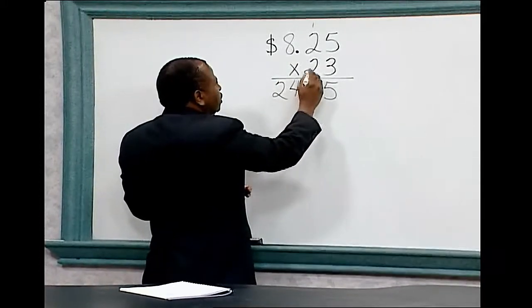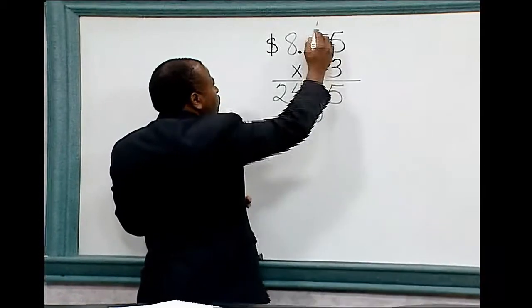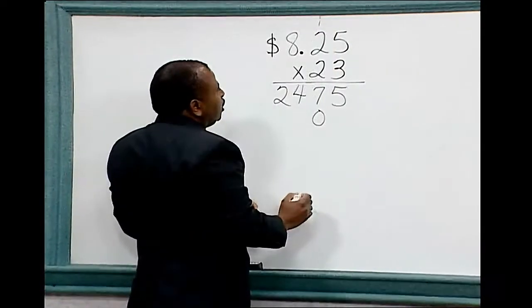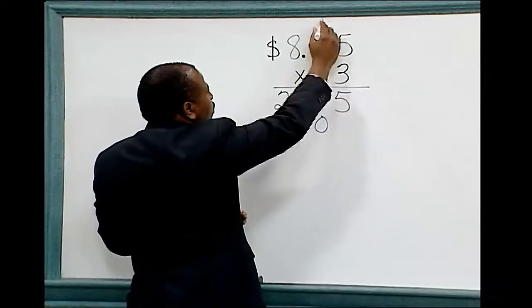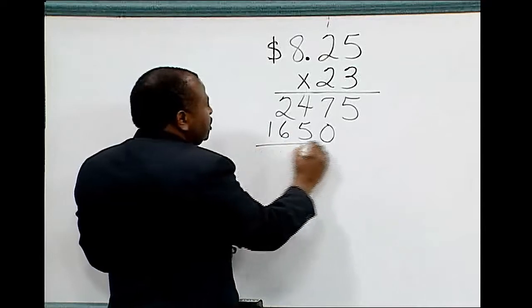Write the entire 16. 2 times 5 equals 10. Write 0, carry the 1. 2 times 2 is 4 plus 1 is 5. 2 times 8 is 16. Write the entire 16.